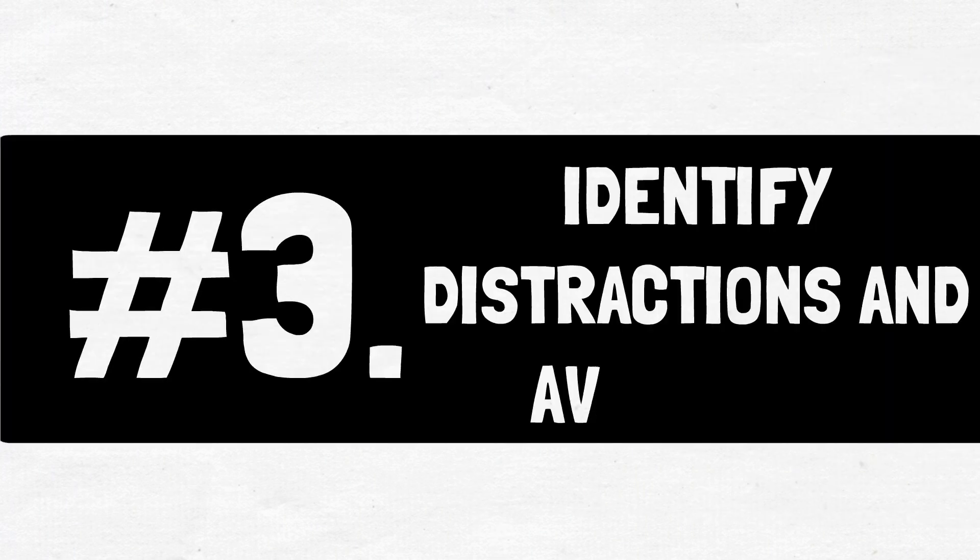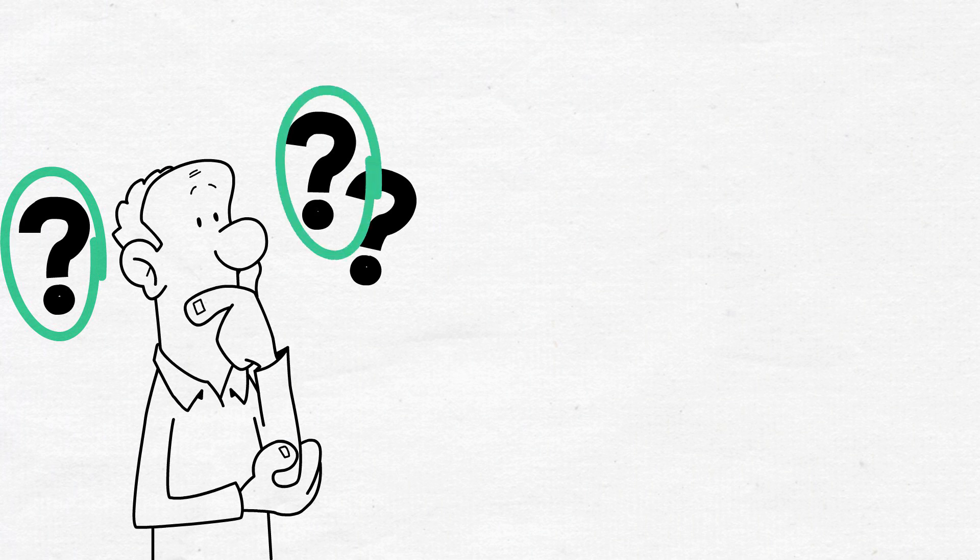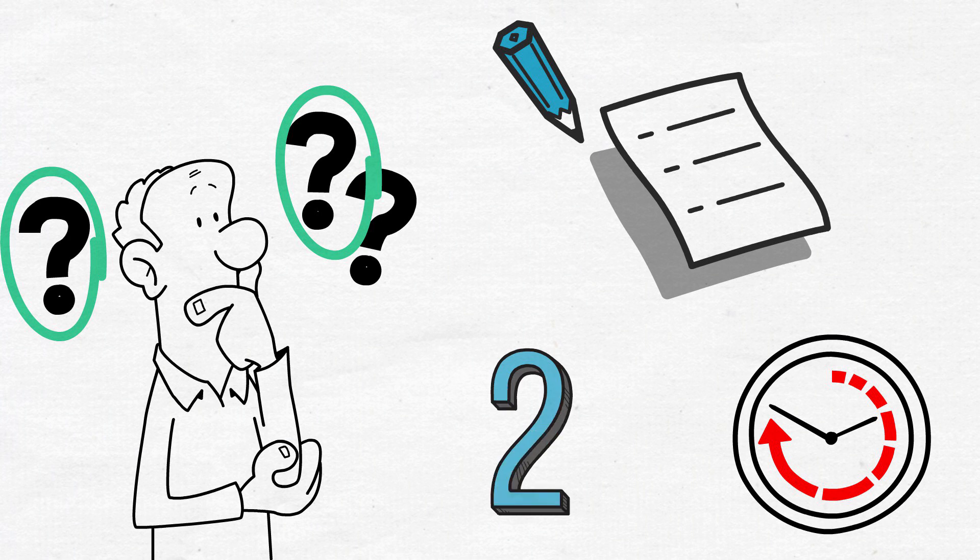3. Identify Distractions and Avoid Them. Mental clarity gets compromised by distractions. Finding out what's distracting you in the first place is the very first step in clearing your thoughts. Make a list of everything that distracts you from your goals while sitting down, along with how frequently it happens. There are two types of distractions.